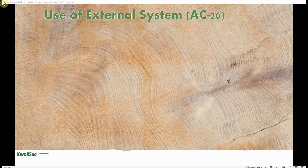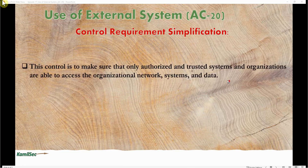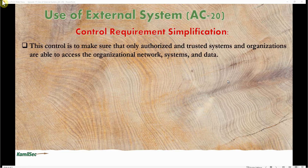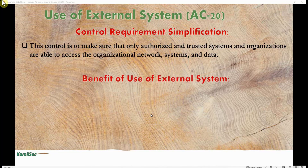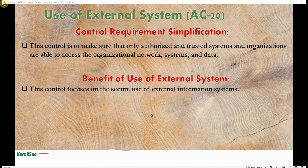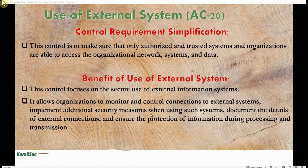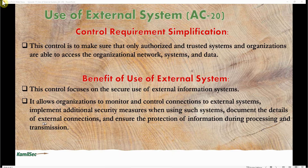Now let's look at the control requirement simplification. This control is to make sure that only authorized and trusted systems and organizations are able to access the organizational networks, systems, and data. The benefits of AC-20 include: focusing on secure use of external information systems, allowing organizations to monitor and control connections to external systems, implementing additional security measures when using such systems, documenting the details of external connections, and ensuring the protection of information during processing and transmission.